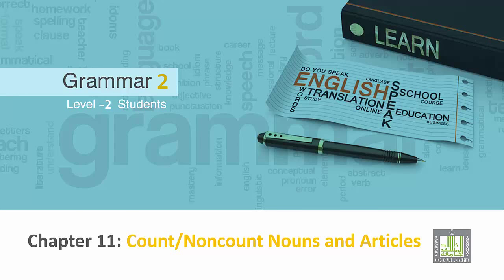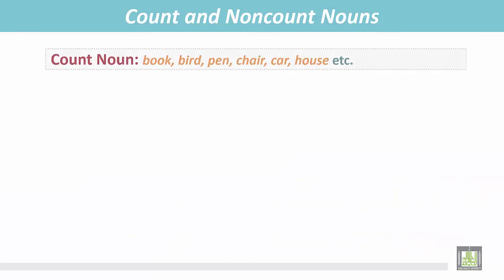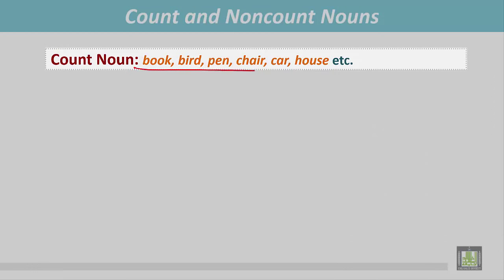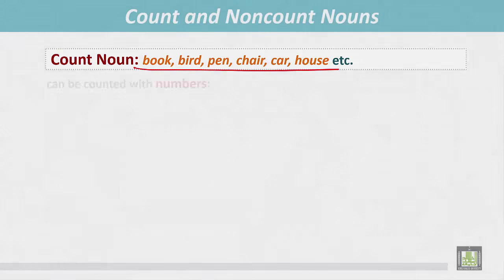Grammar 2 for level 2 students, chapter 11: count or non-count nouns and articles. Count nouns are book, bird, pen, chair, car, house, etc. These count nouns can be counted with numbers.